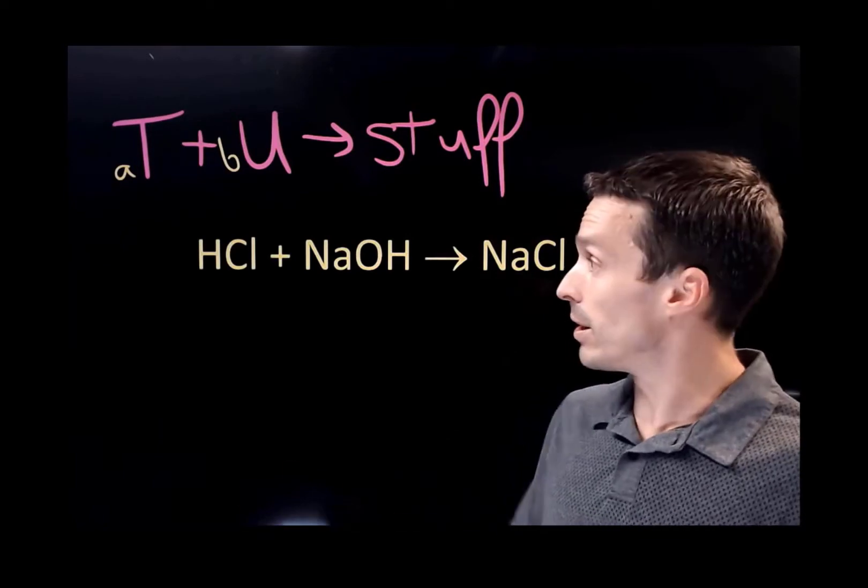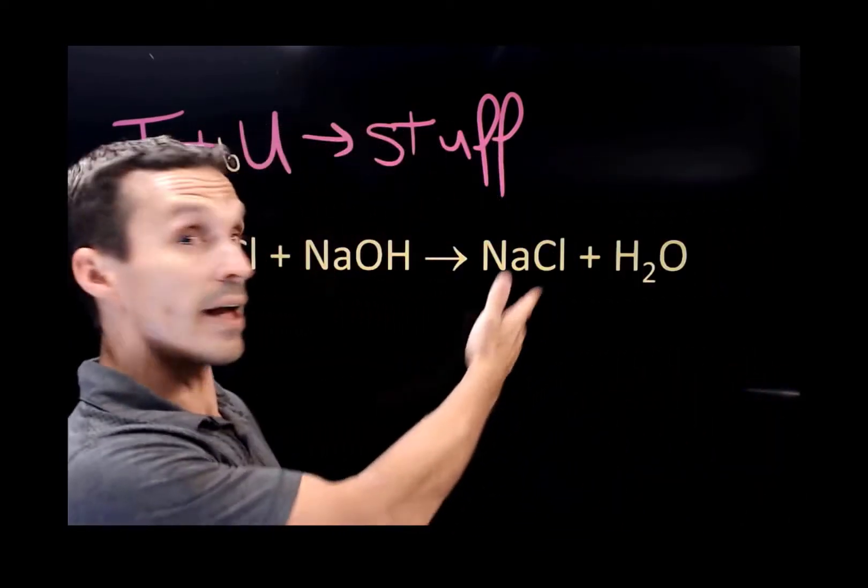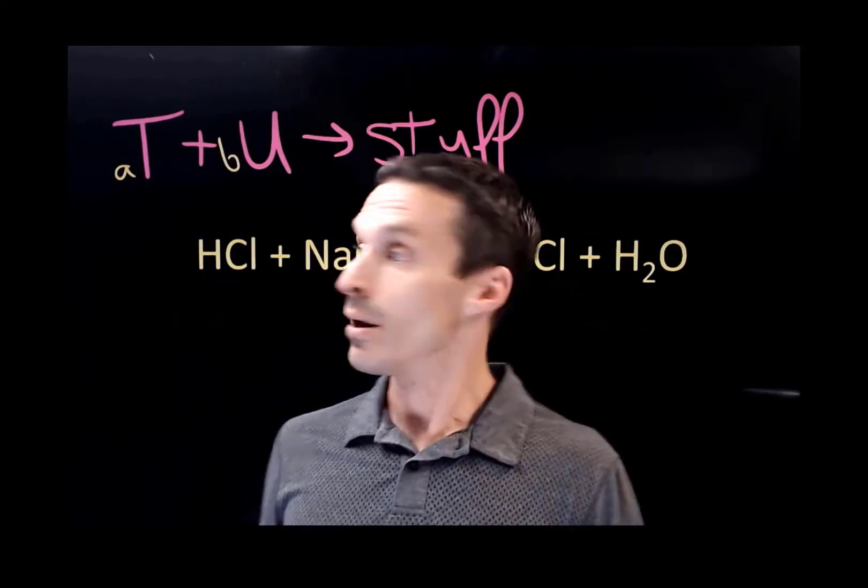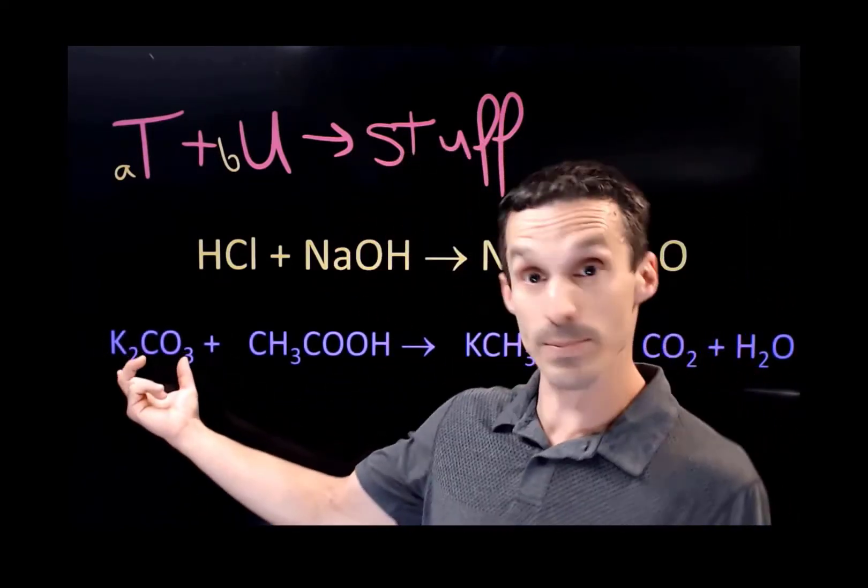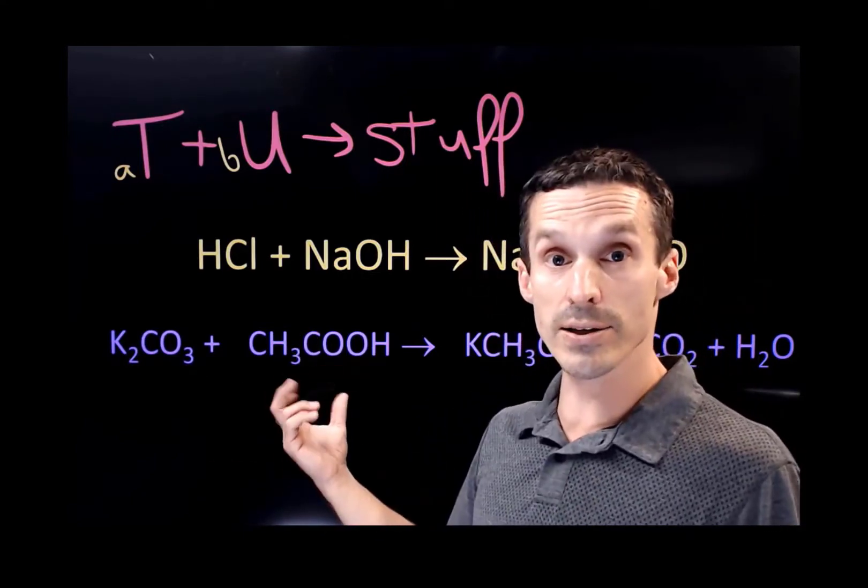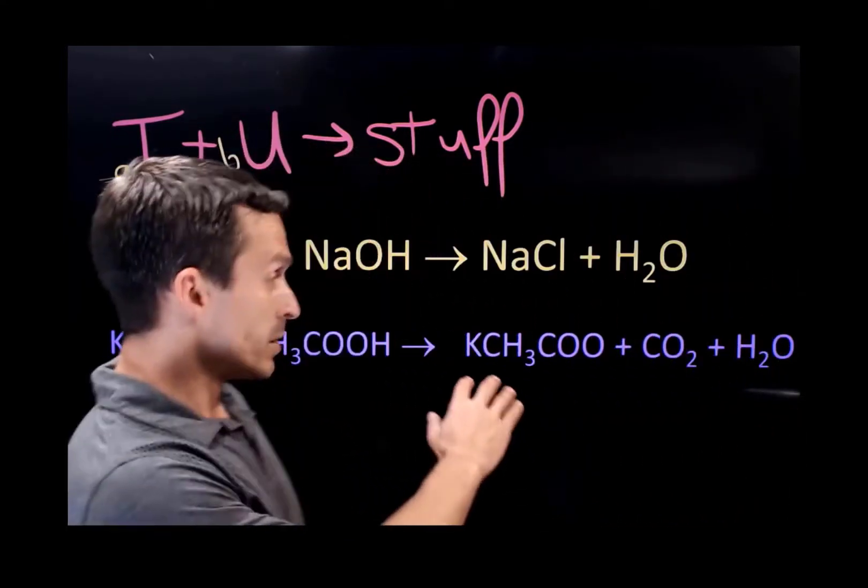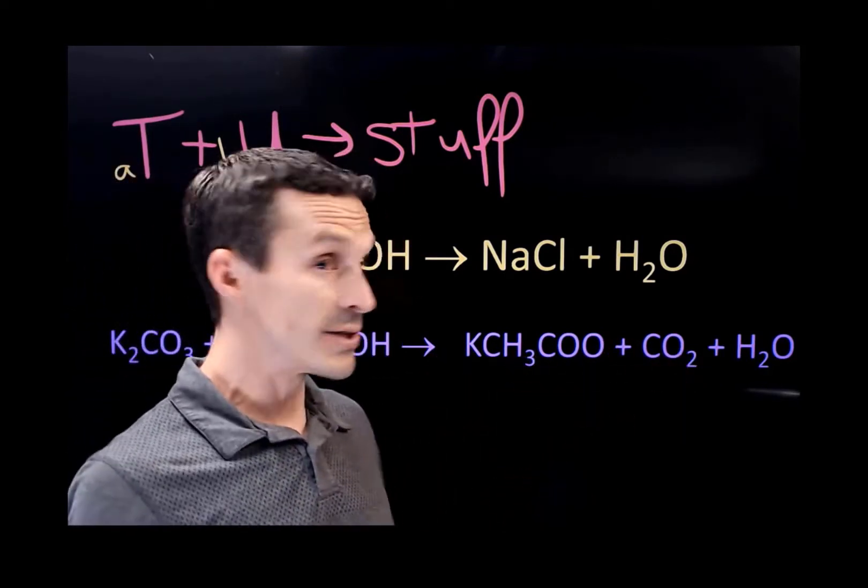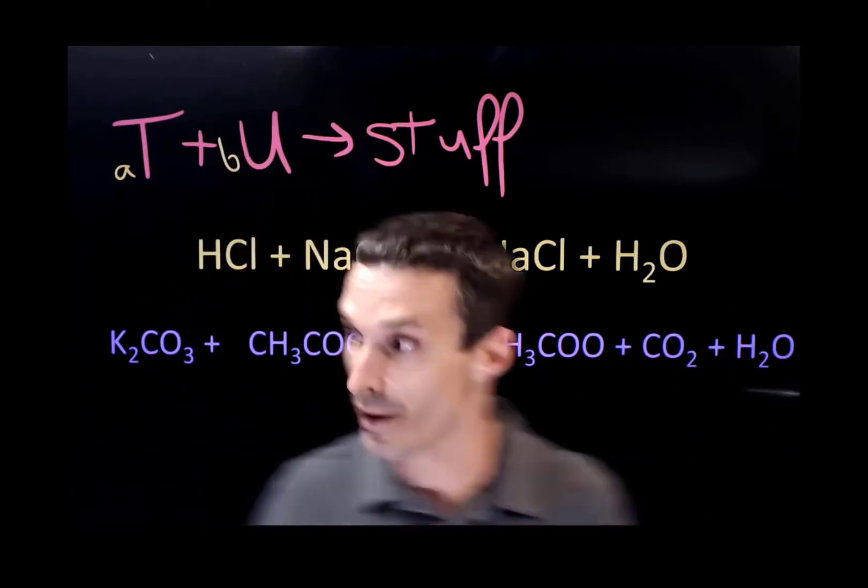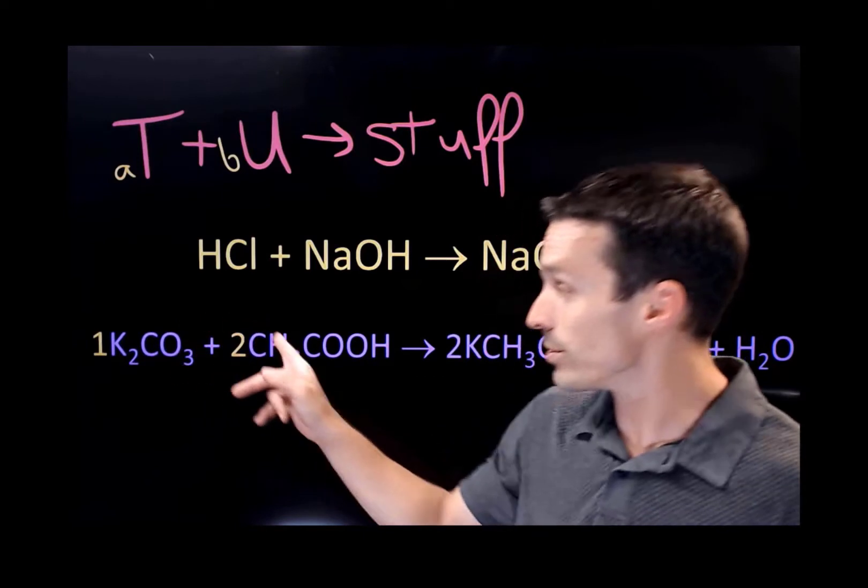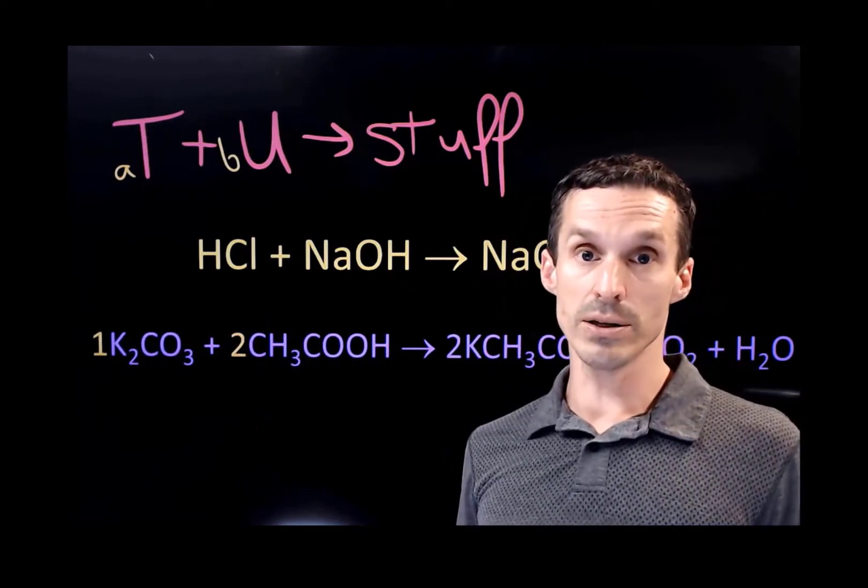T plus U makes, honestly, it doesn't matter what it makes, but it's some stuff. It does matter how these things are balanced. So, the coefficients are going to matter. This will make sense with a real example. So, as you see here, HCl reacts with NaOH to make some salt and some water. This reaction is pretty straightforward because everything is one-to-one. But you might have a system like this, potassium carbonate reacting with acetic acid. This will make some potassium acetate, some CO2, there's the bubbles, and some water.